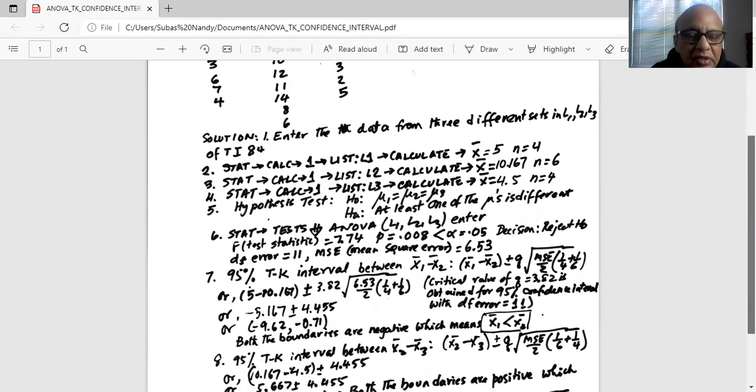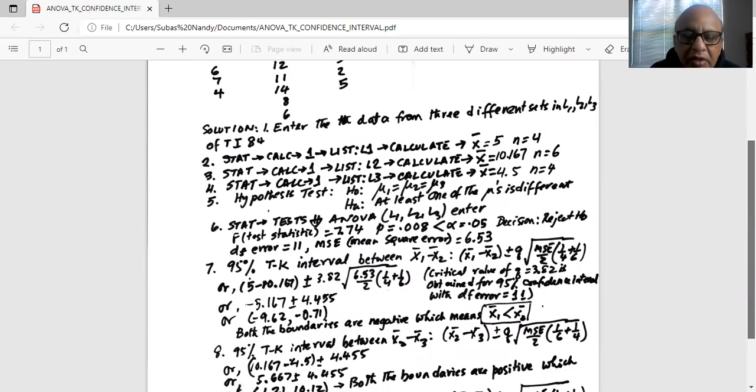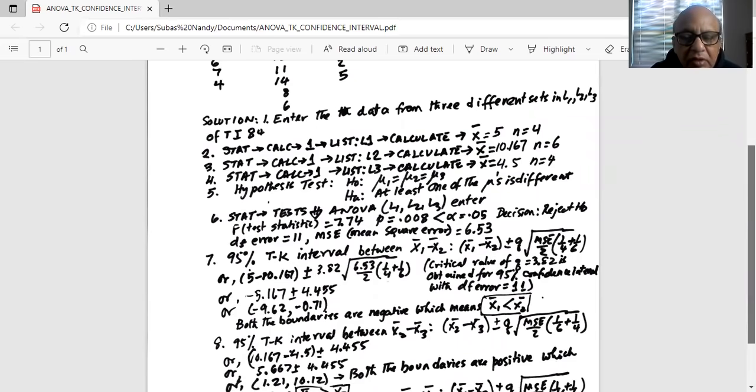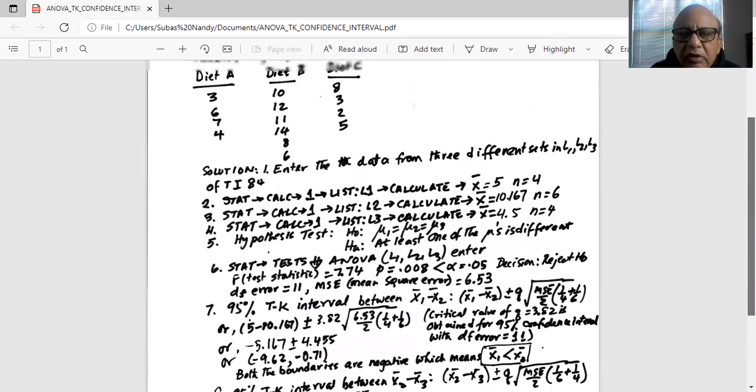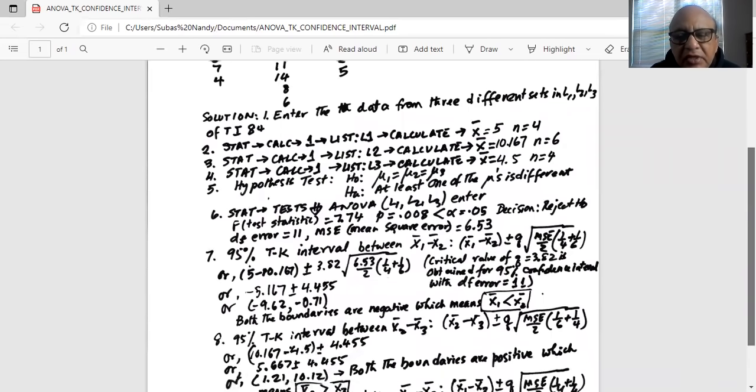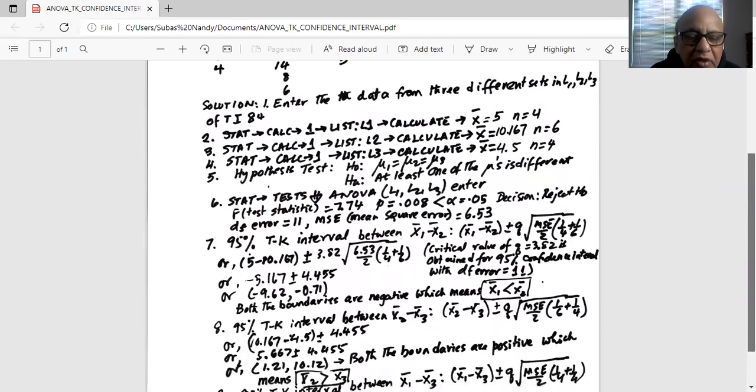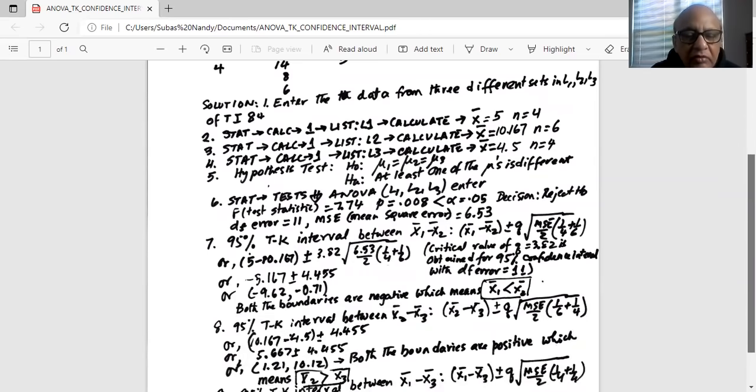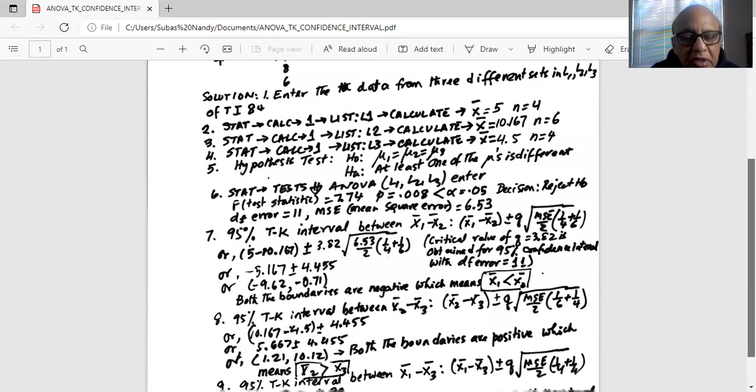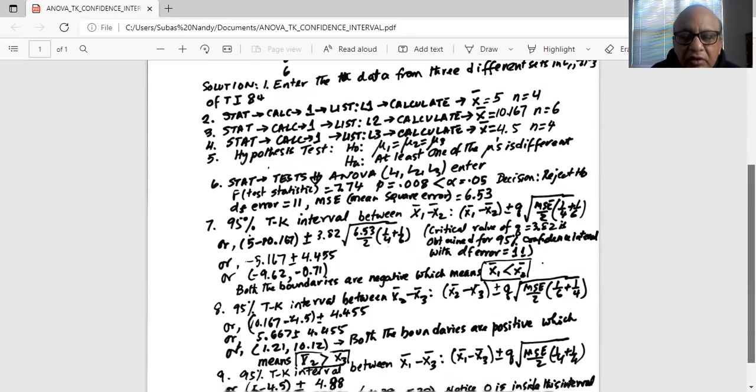We repeat the calculation for the 95% TK interval for x2 bar minus x3 bar. Q will remain the same. So we are comparing 2 and 3, sample size of treatment 2 or diet B is 1/6, and sample size of treatment 3 or diet C is 4, so it is 1/6 plus 1/4. And the interval looks out as 5.667 plus minus 4.455. So you do the minus first, you get 1.21, which is the lower boundary. You do the plus next, 5.667 plus 4.55, you get the upper boundary, 10.12. Notice both the boundaries are positive. It is in the right-hand side of 0 on the number line. What does that mean? That means x2 bar is always greater than x3 bar.